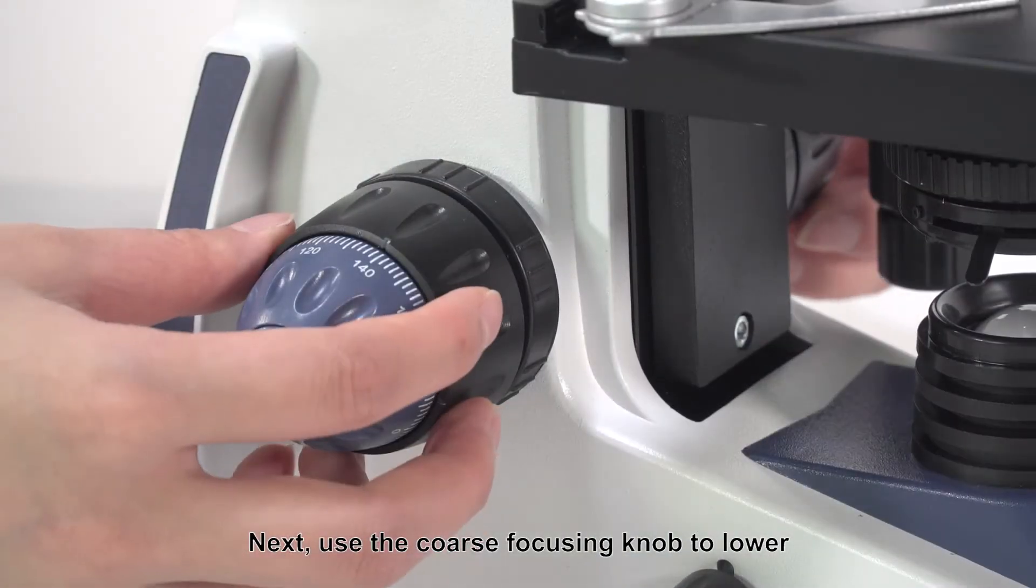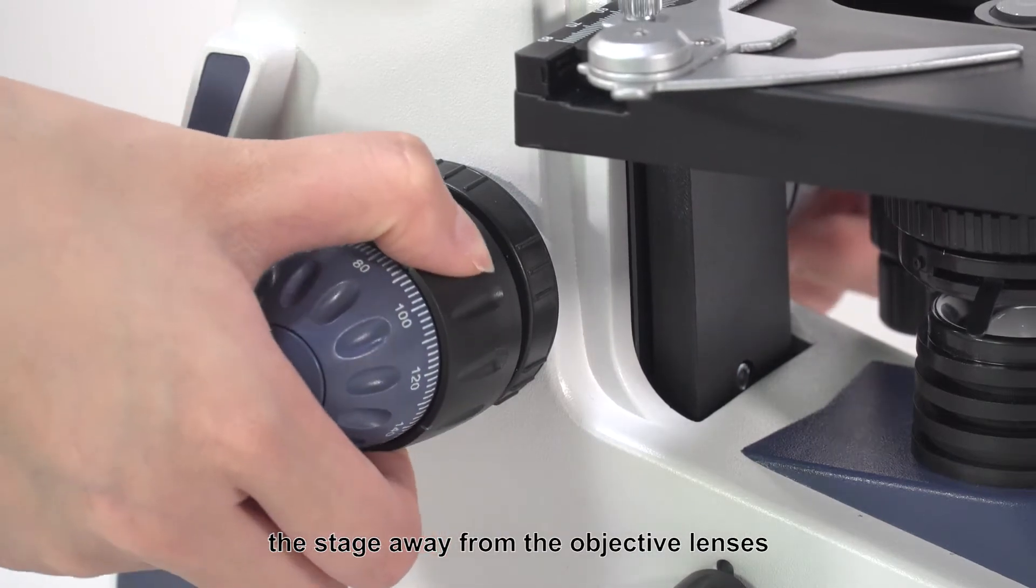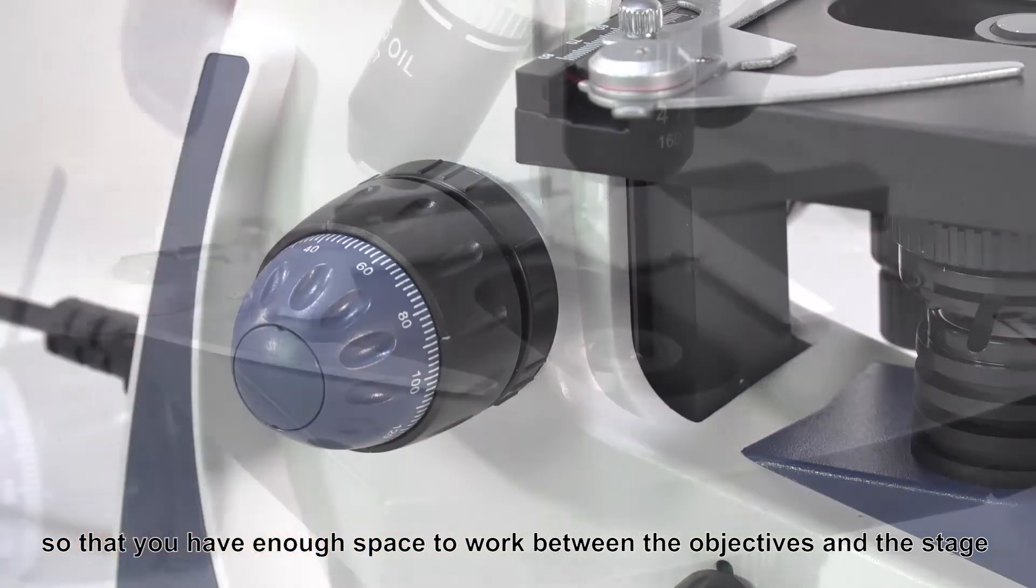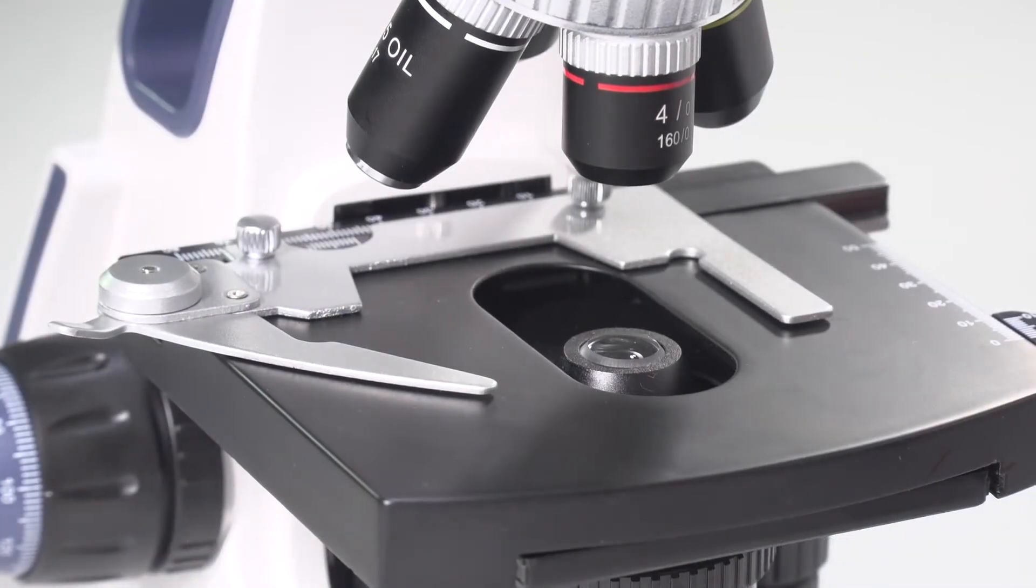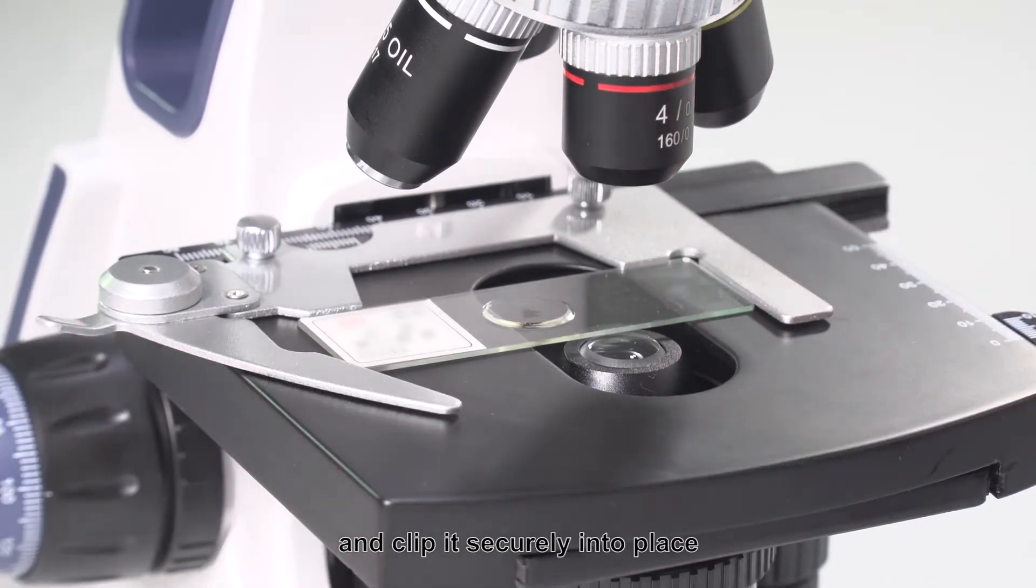Next, use the coarse focusing knob to lower the stage away from the objective lenses so that you have enough space to work between the objectives and the stage. Insert a slide into the slide holder on the stage and clip it securely into place.